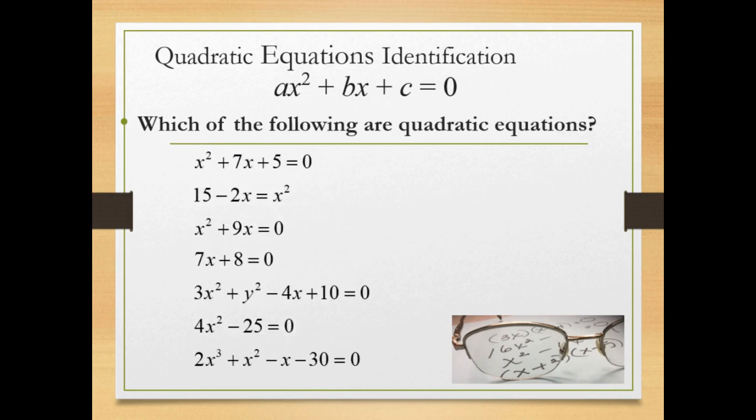So if we look at the first one, we have one variable, and the highest degree is 2. This is a quadratic equation.